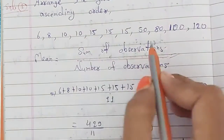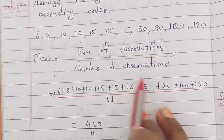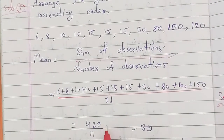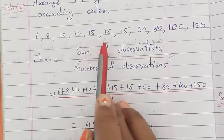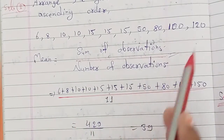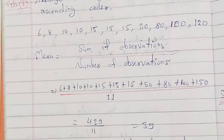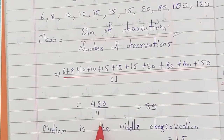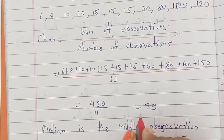Sum of observations means adding all digits together. Number of observations means counting total digits — we count: 1, 2, 3, 4, 5, 6, 7, 8, 9, 10, 11. Total is 11. Adding all the data gives 429 divided by 11, which equals 39. So mean is 39.